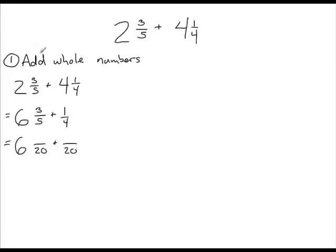We have to ask ourselves what did we multiply 5 by to get 20? Well, we multiplied 5 by 4. Whatever we do to the denominator, we have to do the same thing to the numerator. So we're going to multiply 3 by 4, which gives us 12. We'll do the same for the other fraction: we multiplied 4 by 5, so we multiply 1 by 5 as well. 1 times 5 is 5.